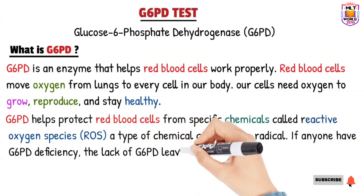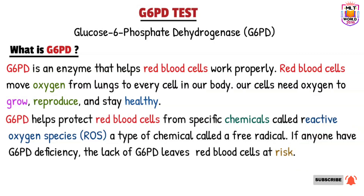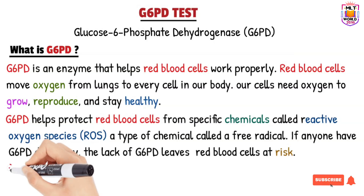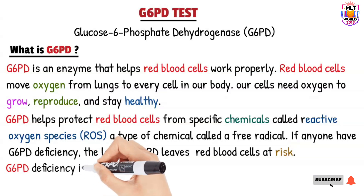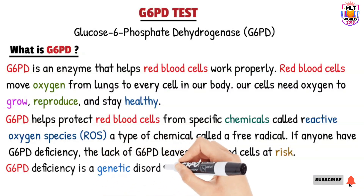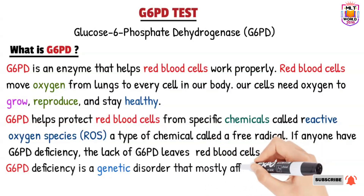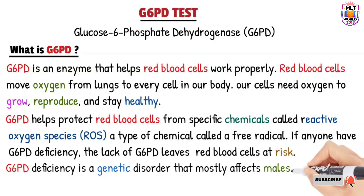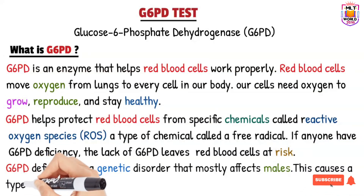The normal red blood cell shelf life is 120 days, but with G6PD deficiency, red blood cells will start to lyse earlier than their normal life period. G6PD deficiency is a genetic disorder and is also one of the most important types of hemolytic anemia.